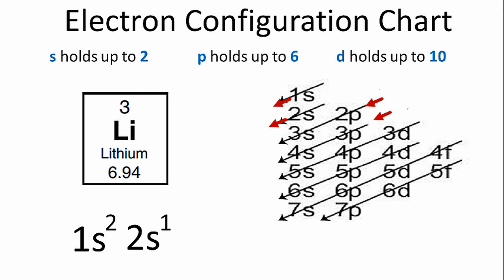If we were to do boron or carbon or any other element, we would continue along in the chart down these rows and find the orbitals and fill them until we use all the electrons.